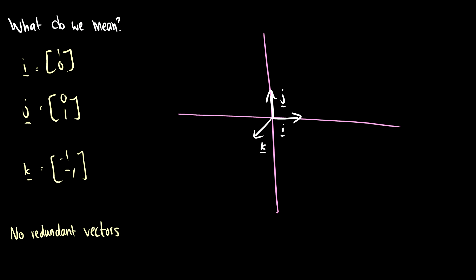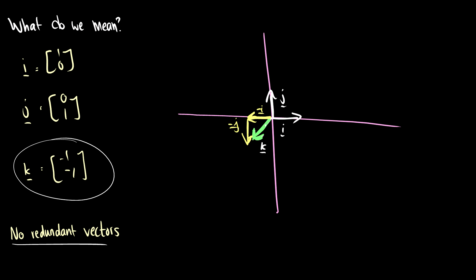Geometrically, we want no redundant vectors. We have vectors i and j — i goes one to the right, j goes one up — and a third vector k which is (-1, -1). The set is dependent because we can get to point k using just i and j: take negative i and negative j and you reach the same spot as k. So k doesn't get us to any new location.